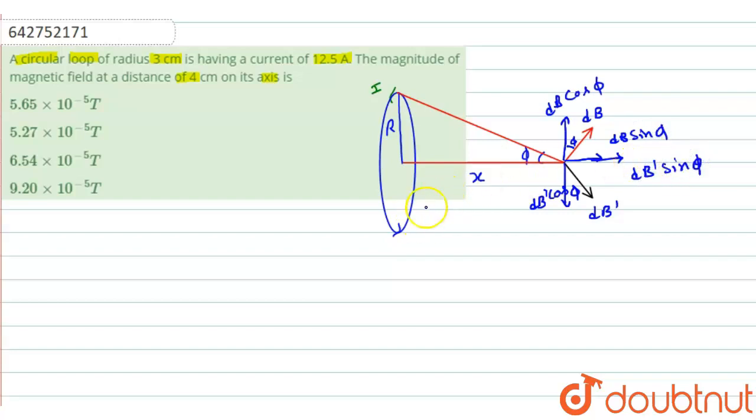As the distance from this point to this point and from this point to this point same, that means dB and dB dash will be same. And dB cos phi and dB dash cos phi are equal and opposite.